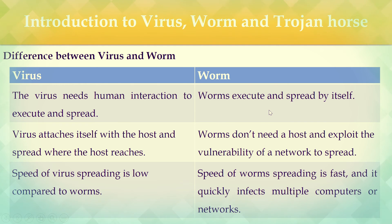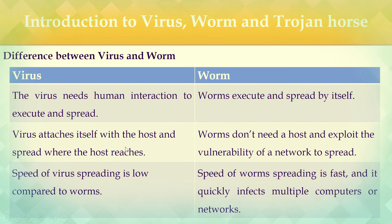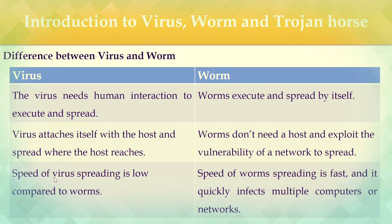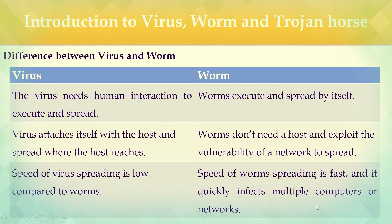A virus attaches itself to a host and spreads wherever the host reaches, while a worm does not need a host and exploits the vulnerability of a network to spread. The spreading speed of a virus is low compared to a worm — a worm spreads fast and quickly infects multiple computers on the network.